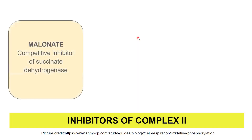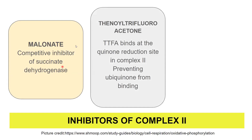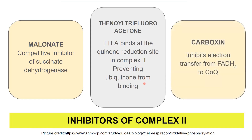The inhibitors of complex two: since succinate dehydrogenase's ideal substrate is succinate, malonate — which has a similar structure — acts as a competitive inhibitor, competing with succinate for the active site. Next is TTFA (thienoyltrifluoroacetone), which binds to the quinone reduction site in complex two, preventing ubiquinone from binding and blocking electron passage. Carboxin inhibits the transfer of electrons from FADH2 to coenzyme Q. These are the three inhibitors of complex two.